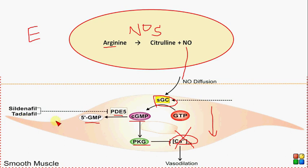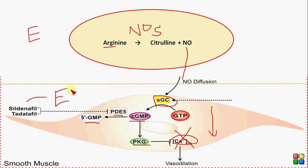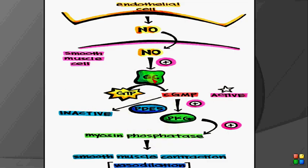Drugs such as sildenafil and tadalafil inhibit phosphodiesterase, and as a result cyclic GMP accumulates inside the vascular smooth muscle. When cyclic GMP accumulates it promotes vasodilation. These drugs are used to treat erectile dysfunction in males, which is essentially a vasodilatory phenomenon — when the vasodilatory substance cyclic GMP accumulates, erectile dysfunction is treated.